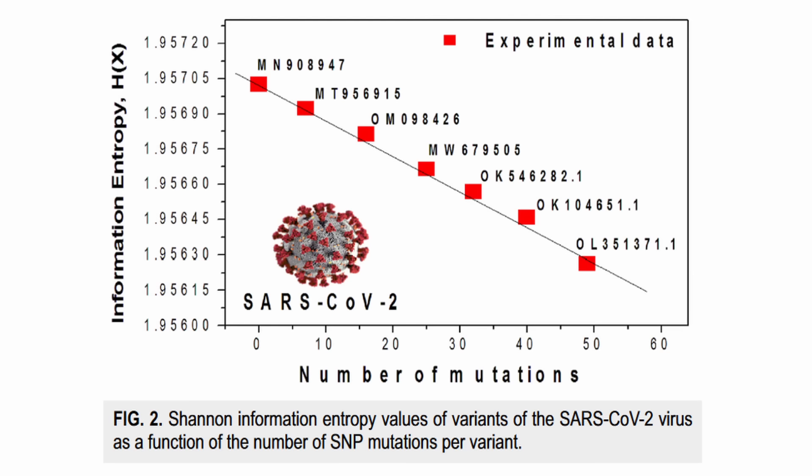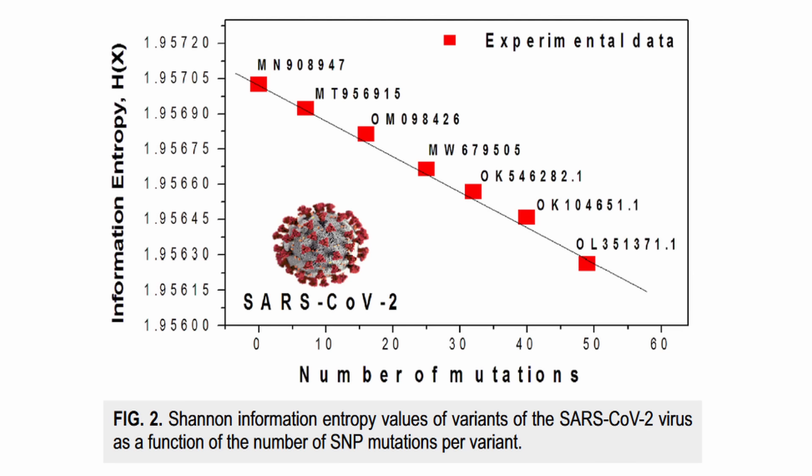They examined mutations in COVID-19 viruses as part of their research. Surprisingly, their findings revealed a clear link between information and how genetic mutations happened. They noticed that as the number of mutations increased over time, information entropy consistently decreased in a linear way. In essence, genetic information became more efficiently stored through successive mutations.